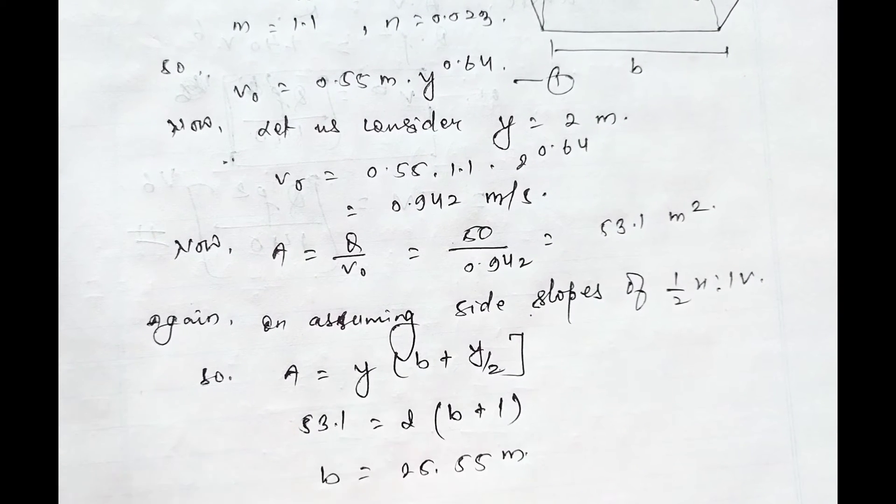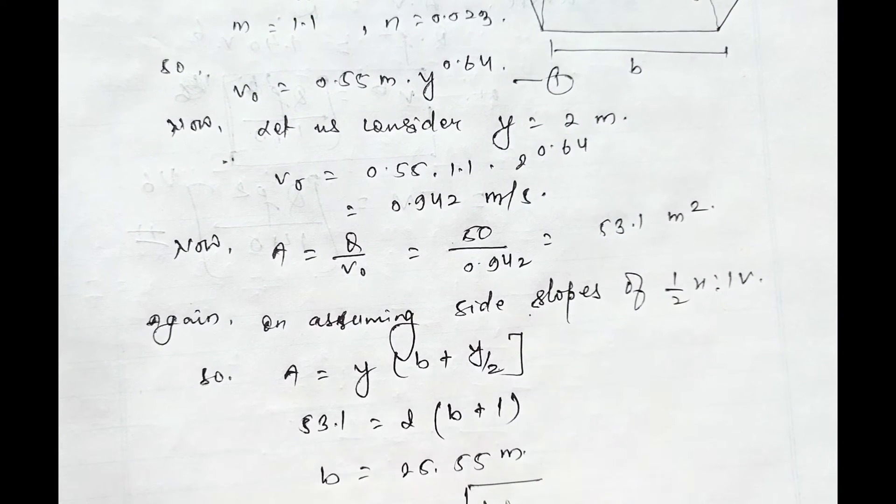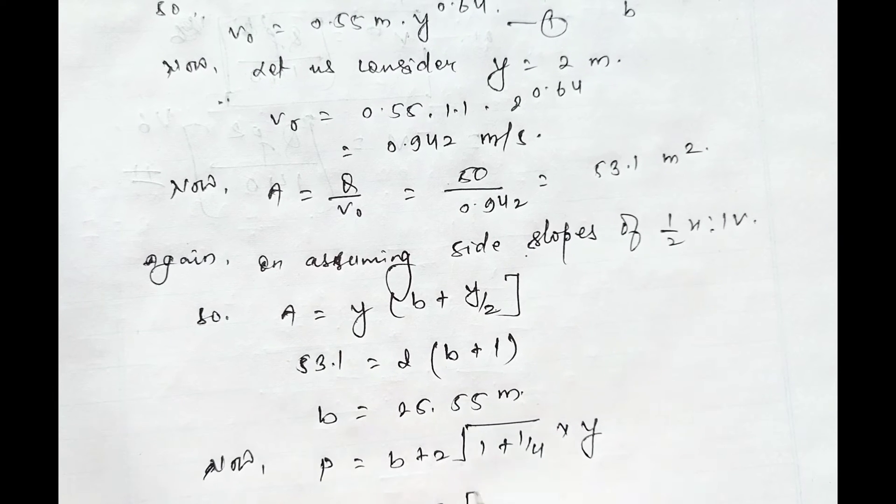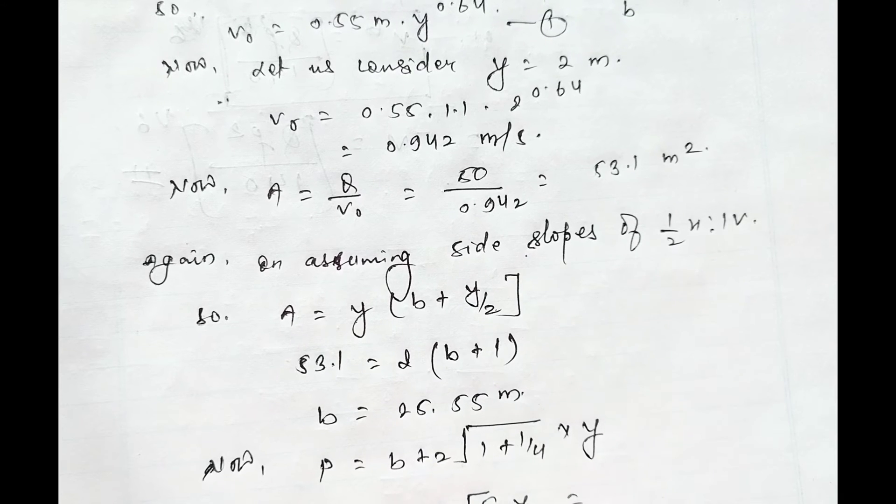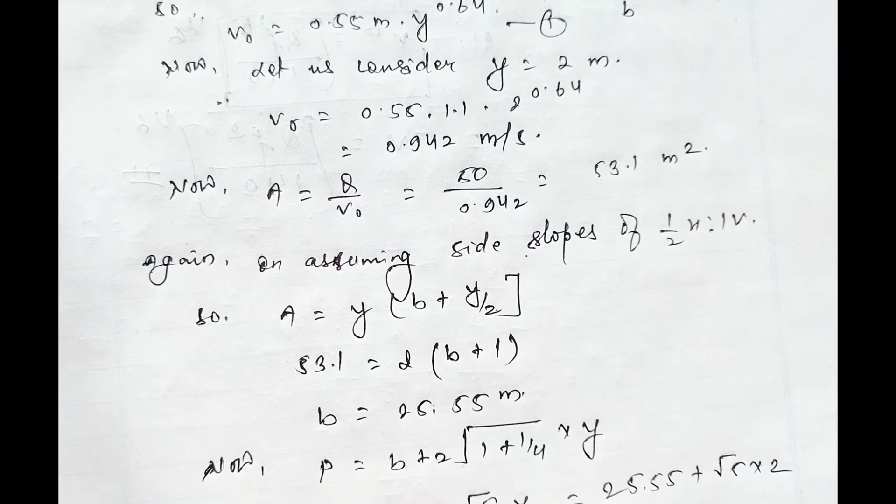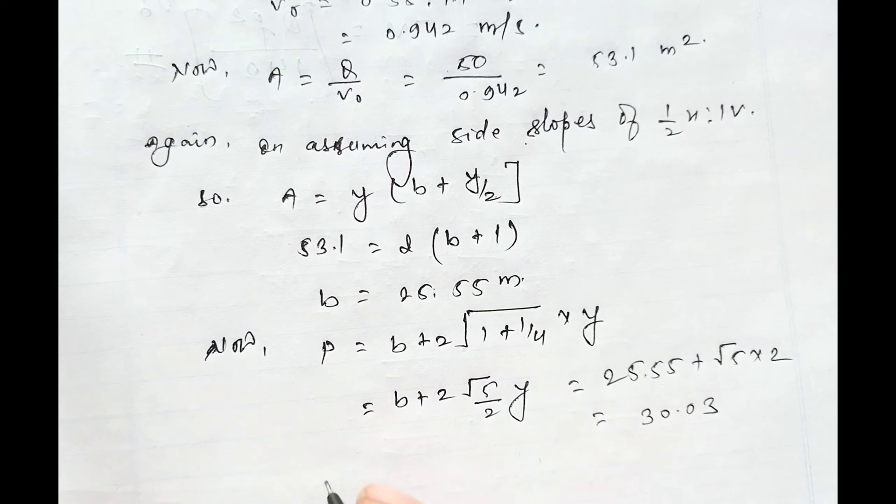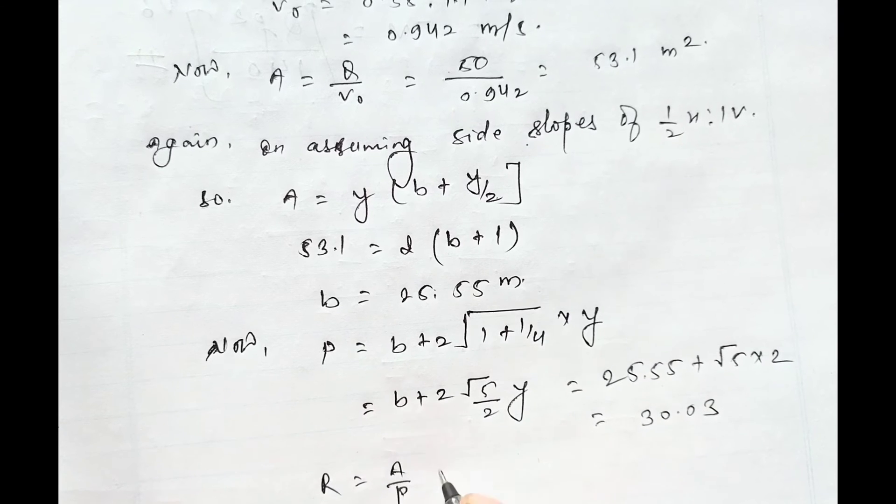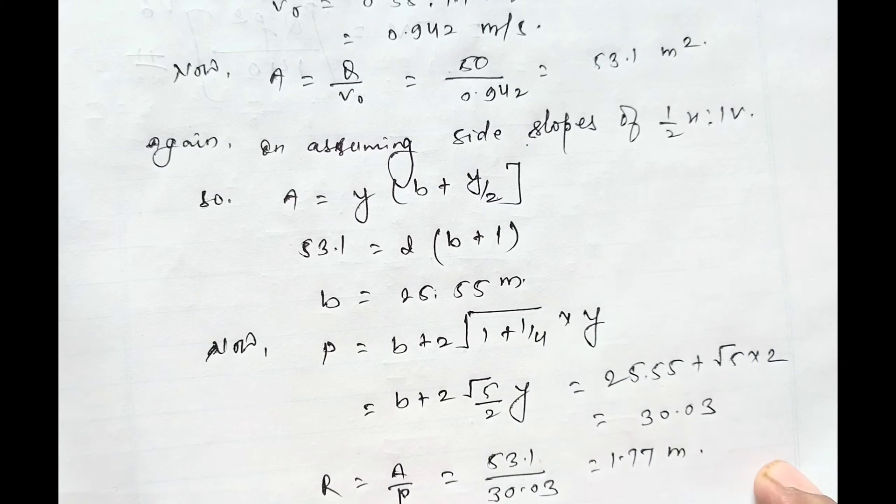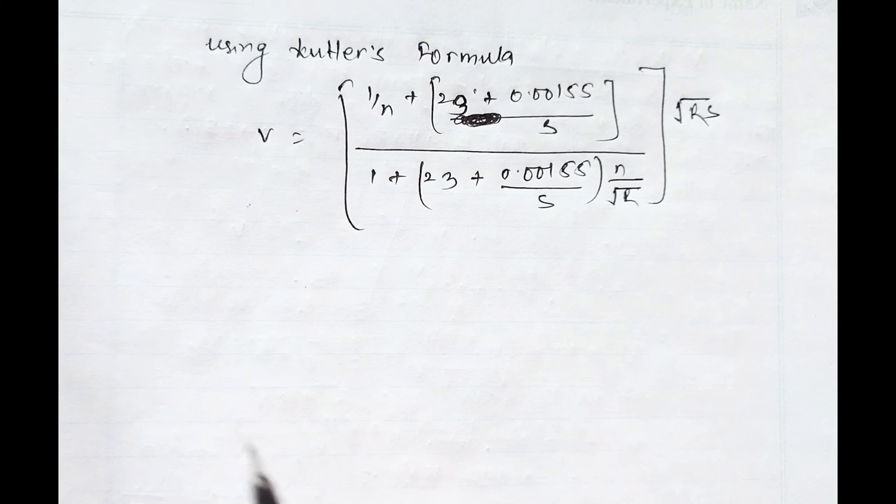Now perimeter P equals B plus 2√(1 + 1/4) × y, equals B plus 2√(5/2) × y, equals 25.55 plus √5 × 2, equals 30.03. So the hydraulic radius R equals A by P, equals 53.1 divided by 30.03, equals 1.77 meter.